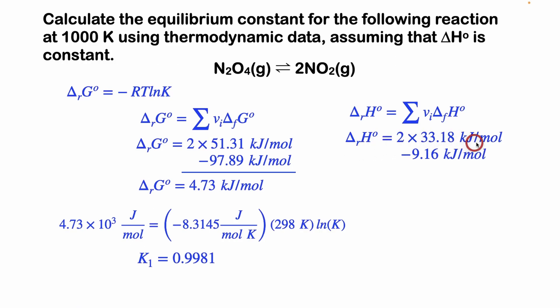So if we plug that into here, we have 2 times our 33.18 kilojoules per mole of our product, minus reactants, which is 9.16 kilojoules per mole. And if we add that all up, or calculate it, our enthalpy of reaction, standard enthalpy of reaction, equals negative 1.58 kilojoules per mole. Okay, so we got the K1 and the enthalpy of reaction.